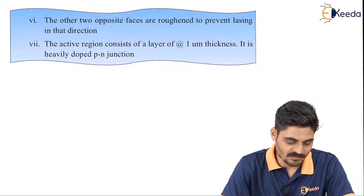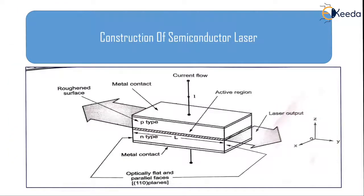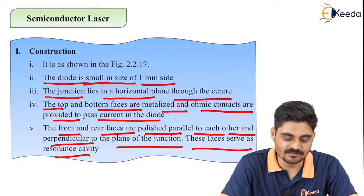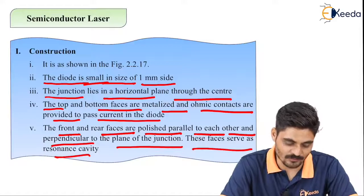As shown in the diagram, this is the P-type layer, this is the N-type layer, and the junction is in between them. Metallic contacts are established at the top and bottom to allow current in and out of the circuit. The active region lies between the two P-type and N-type substrates of the p-n junction diode.